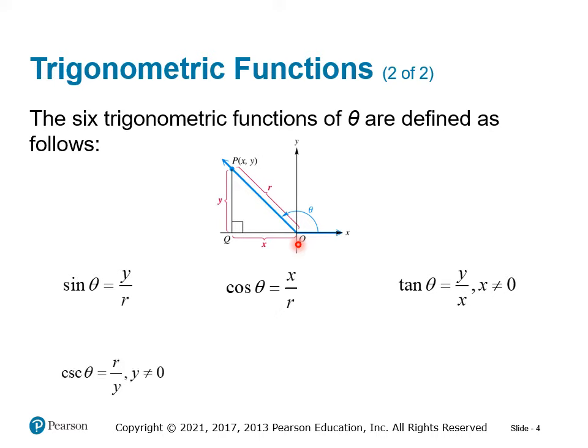We now have reciprocals of these. Cosecant is the reciprocal of sine; its value is r over y, where y cannot equal zero or it's undefined. The reciprocal of cosine is secant, equal to r over x. And finally, cotangent is the reciprocal of tangent, which is x over y. Make sure you have these in your notes right now — hit pause if you need to. Specifically: sine is y over r, cosine is x over r, tangent is y over x, and then cosecant, secant, and cotangent are their respective reciprocals.